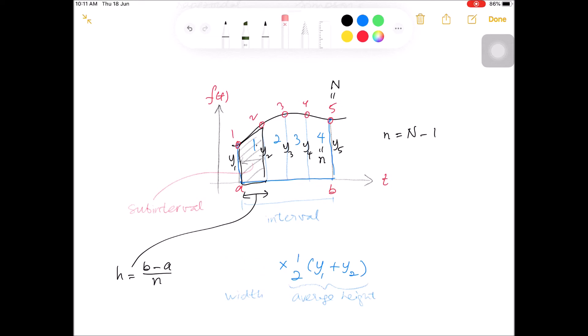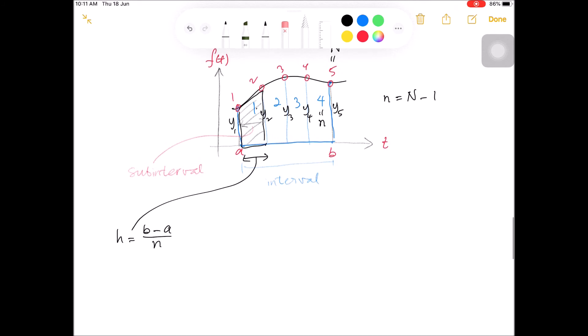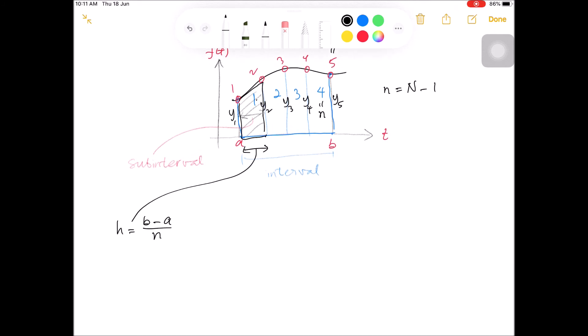So the sum of the area is H times half Y1 plus Y2, plus H times half Y2 plus Y3, plus H times half Y3 plus Y4, and plus H times half Y4 plus Y5. So each of these terms represent the area of one strip.